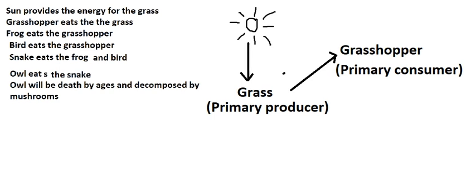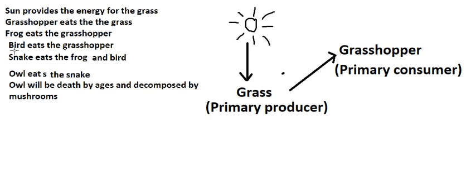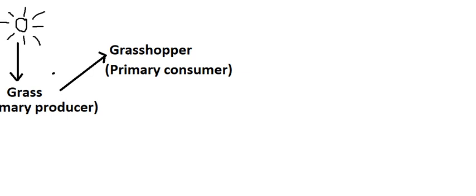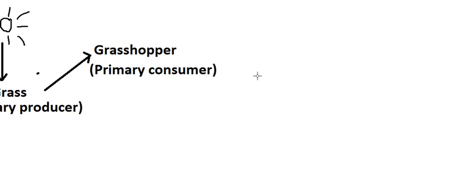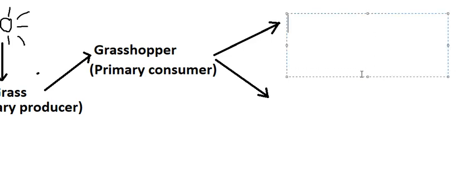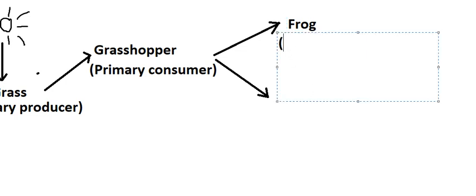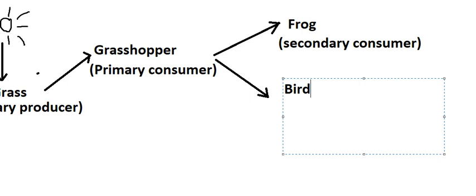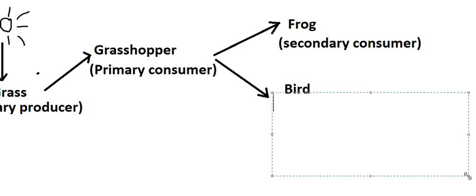On the next level, the frog eats the grasshopper and the bird also eats the grasshopper. So in this one we have two secondary consumers, and we place them like this. This is about secondary consumers — one for the frog and one for the bird.